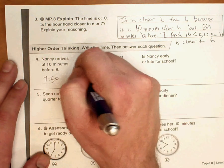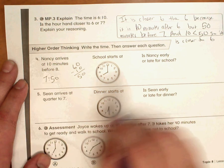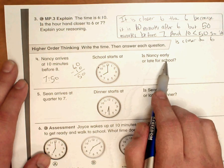Again, we could have said 60 minus 10 equals 50 to find the time there. So is Nancy early or late for school?